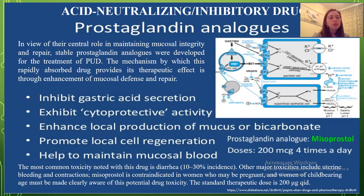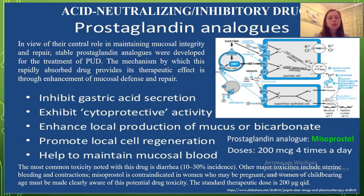Regarding prostaglandin analogues: stable prostaglandin analogues were developed for the treatment of peptic ulcer disease. The mechanism by which this drug provides its therapeutic effects is through enhancement of mucosal defense and repair, inhibition of gastric acid secretion, cytoprotective activity, enhanced local production of mucus and bicarbonate, promotion of local cell regeneration, and maintenance of mucosal blood flow. An example of an active substance is misoprostol.